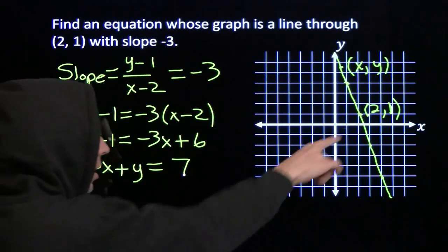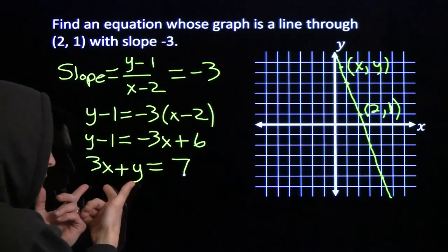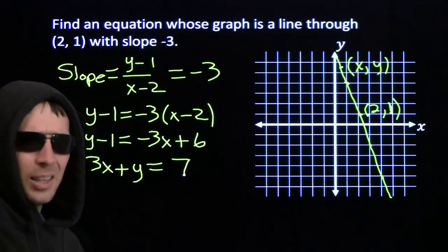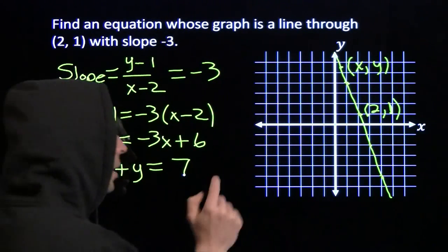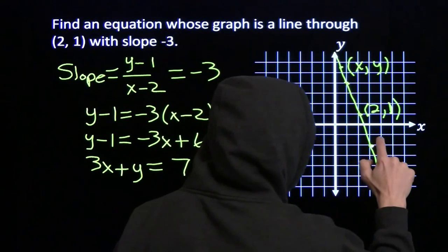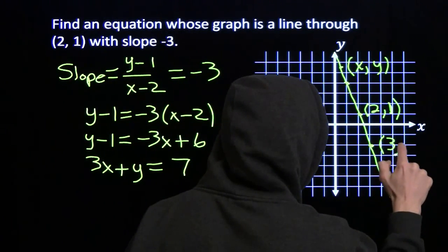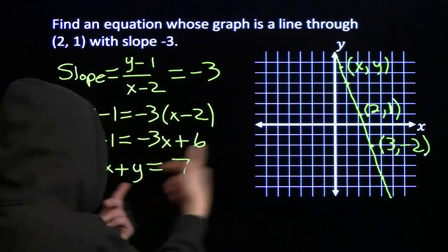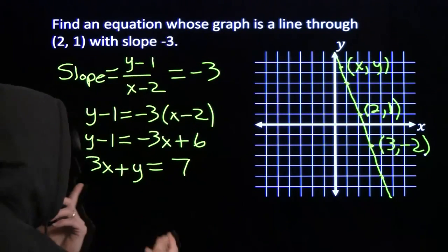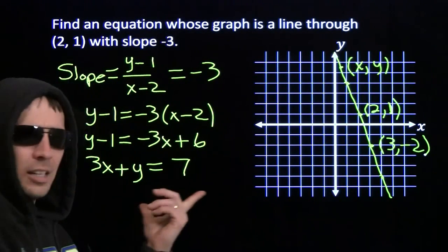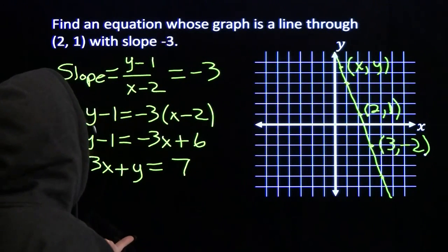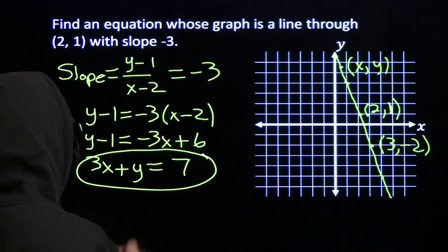We can check this out as well. Take the point that we were given. Does it work in here? 3 times 2 is 6. Add the 1. We get 7. Let's test another point. Line looks like it goes through right here. It's (3,-2). Let's try that out. We put x equals 3 in here. We get 3 times 3 is 9. Add the -2, we get 7. Looks like we have a winner.